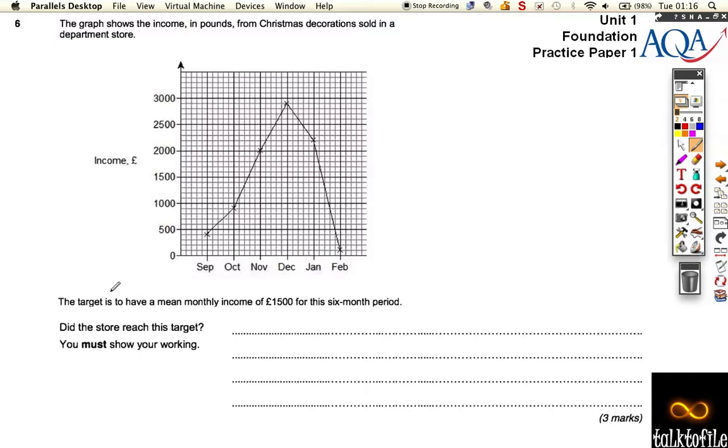And it says that the target is to have a mean monthly income. The mean is that calculation you've got to do, where it's the total of everything divided by how many things. So, it's the total of everything divided by how many things there are.